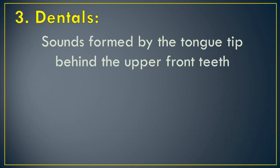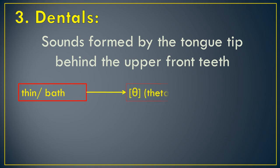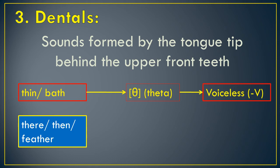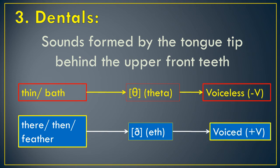The third place of articulation is dentals. These are sounds formed by placing the tongue tip behind the upper front teeth. We have the 'th' sound like in 'thin,' represented by the symbol theta, and this is voiceless because there is no vibration. We also have the 'th' sound like in 'there' or 'then,' represented by the eth symbol, and this is voiced. So in dentals, we have two sounds: one voiceless and one voiced.